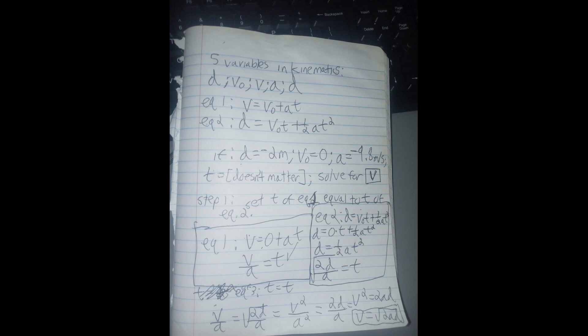And equation two has one, two, three, four variables as well. Distance, initial velocity, time, and acceleration.